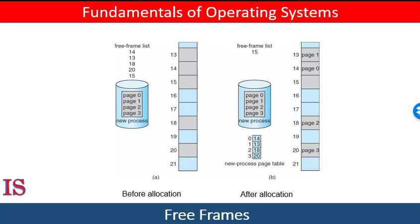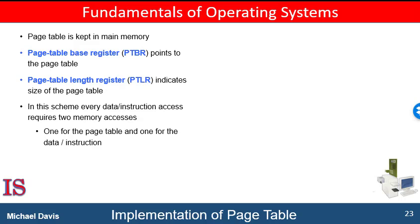This copy is used to translate logical addresses to physical addresses whenever the operating system must map a logical address to a physical address manually. It is also used by the CPU dispatcher to define the hardware page table when a process is allocated to the CPU. Paging therefore increases the context switch time. A pointer to the page table is stored with the other register values, like an instruction pointer, in the process control block of each process.